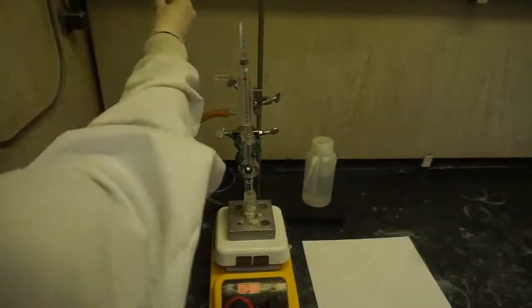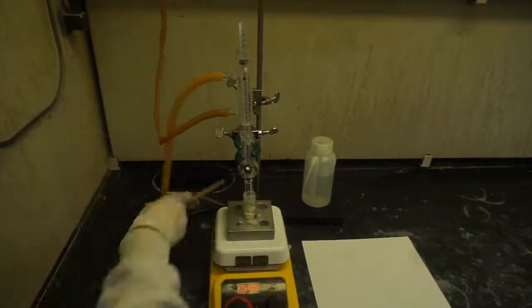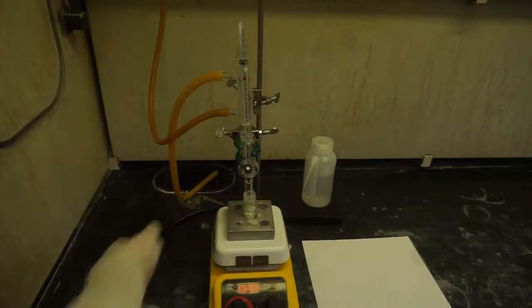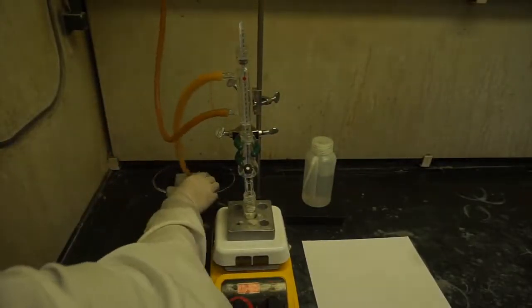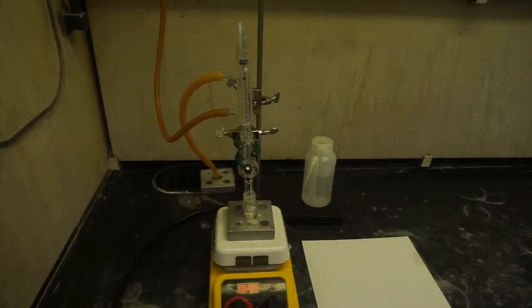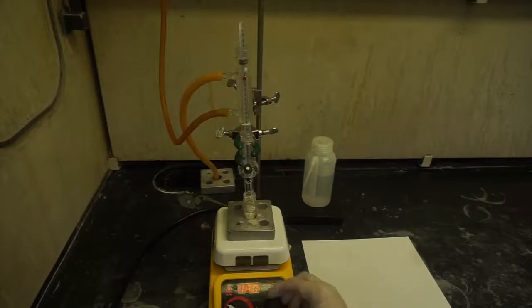Attach the latex tubings to the inlet and outlet of the condenser. Start heating the mixture and make sure the water is running inside the condenser. Also, don't forget to stir the solution on the hot plate.